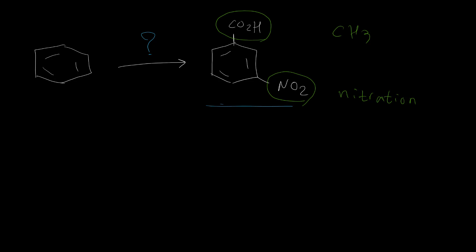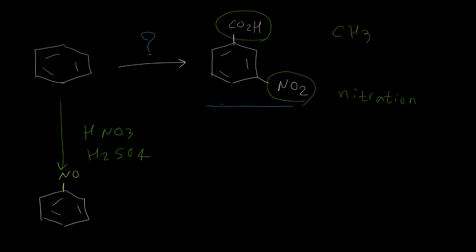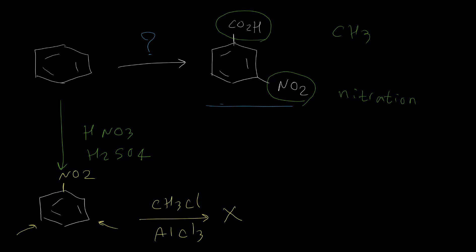If I perform nitration reaction first, it seems it could be a good strategy because the nitro group is meta-directed. But one very important thing to know: the nitro group and other strong electron-withdrawing groups cannot undergo Friedel-Crafts reactions. So any attempt to perform a Friedel-Crafts reaction on nitrobenzene fails. So first, we need to perform the Friedel-Crafts reaction, which converts benzene to toluene.